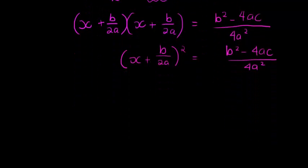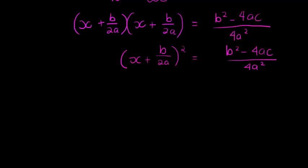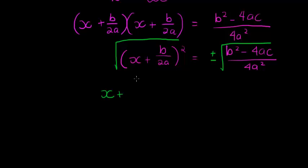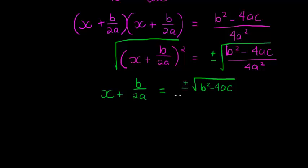Now all I need to do is take a square root on both sides, since I have a squared expression on the left containing my unknown. When we take the square root, we put a plus-minus. So on the left-hand side I have x plus b over 2a. On the right-hand side, we take the square root of b squared minus 4ac — we don't know what that is, so we keep it. But the square root of 4 is 2, and the square root of a squared is just a.